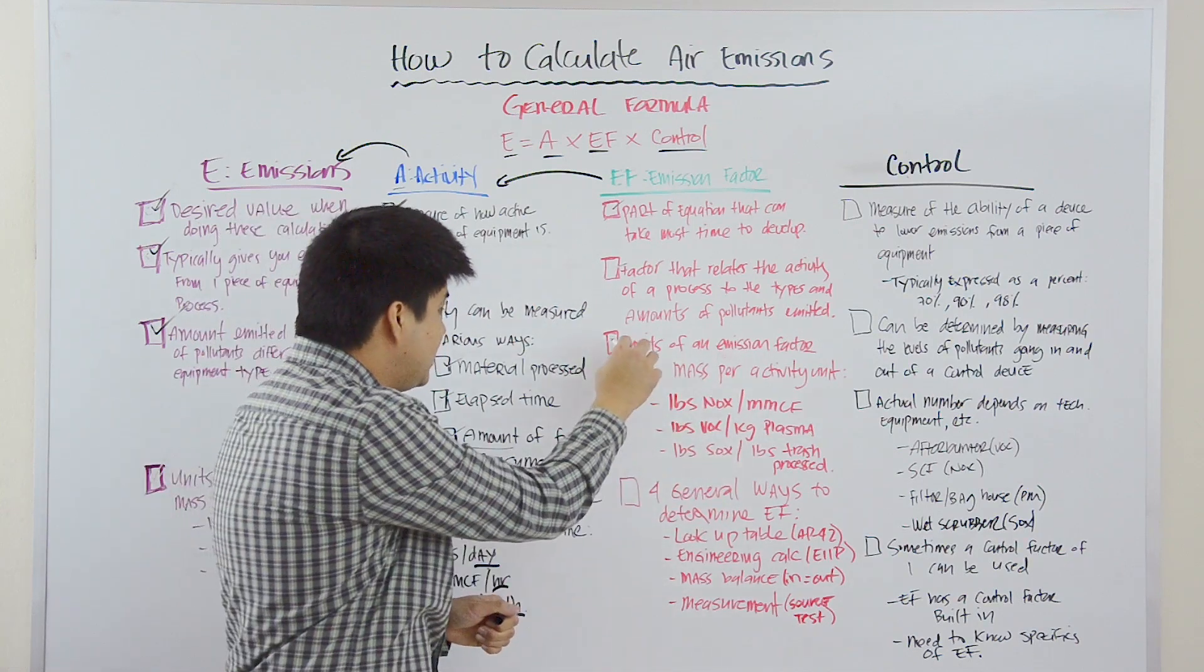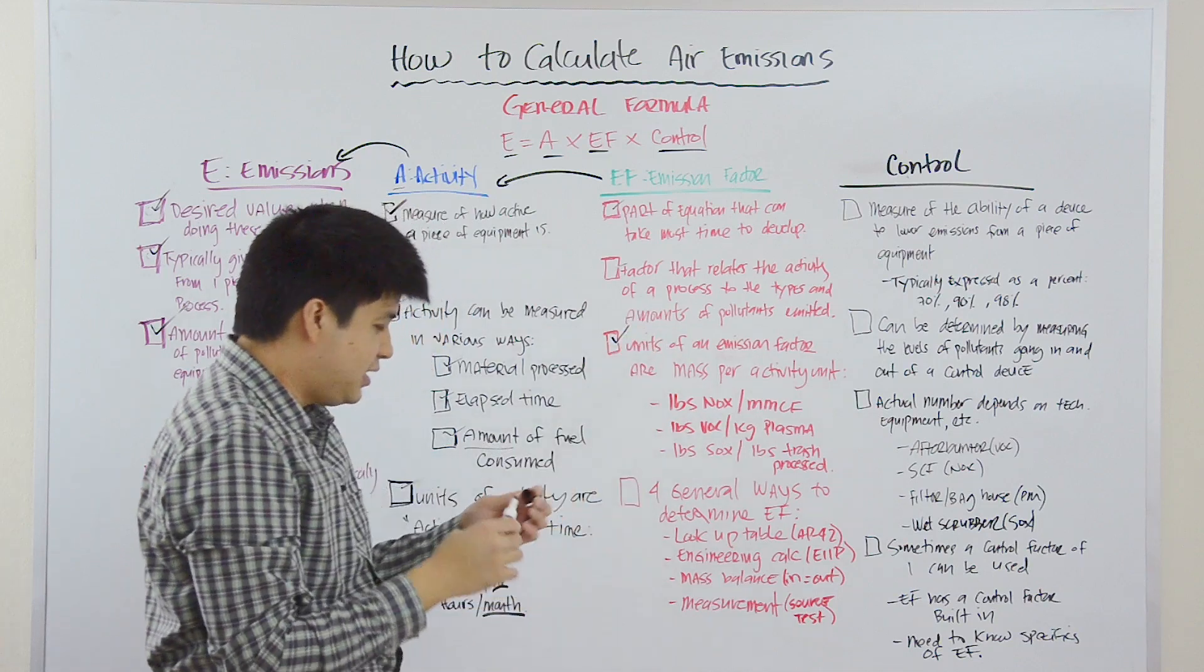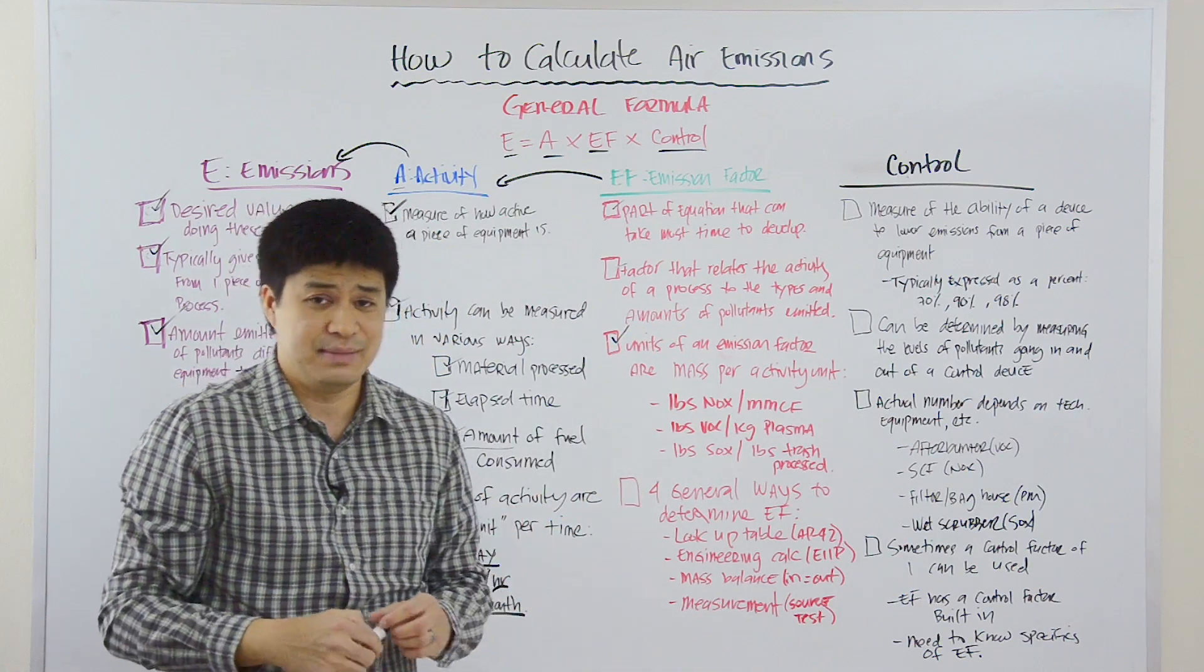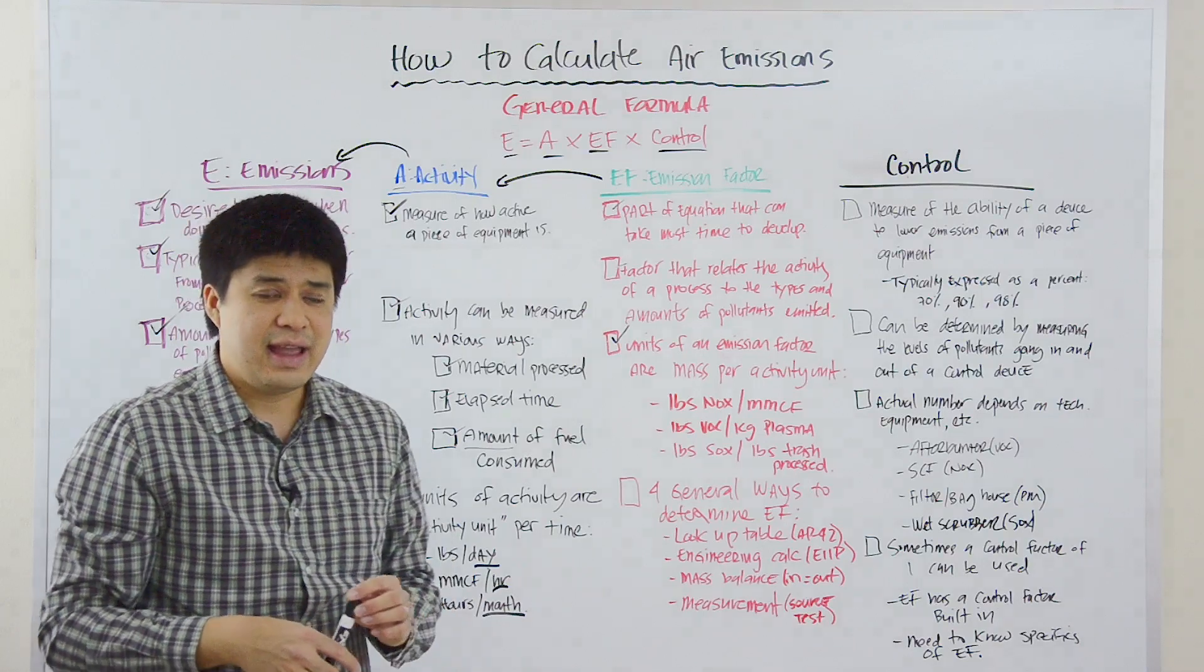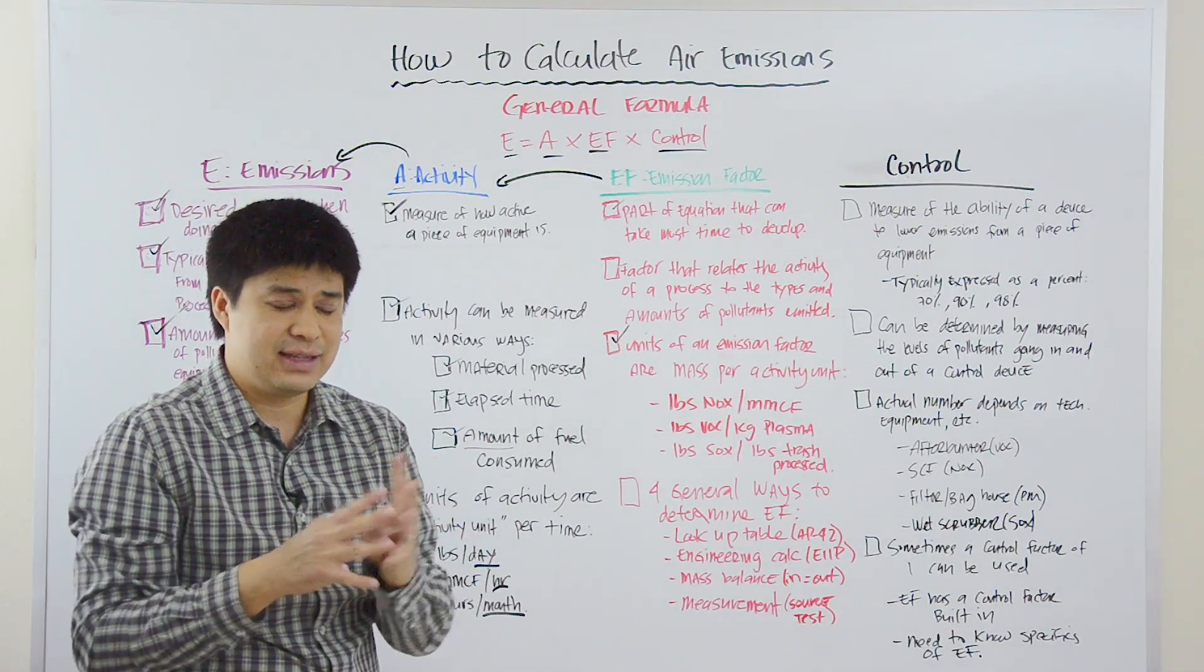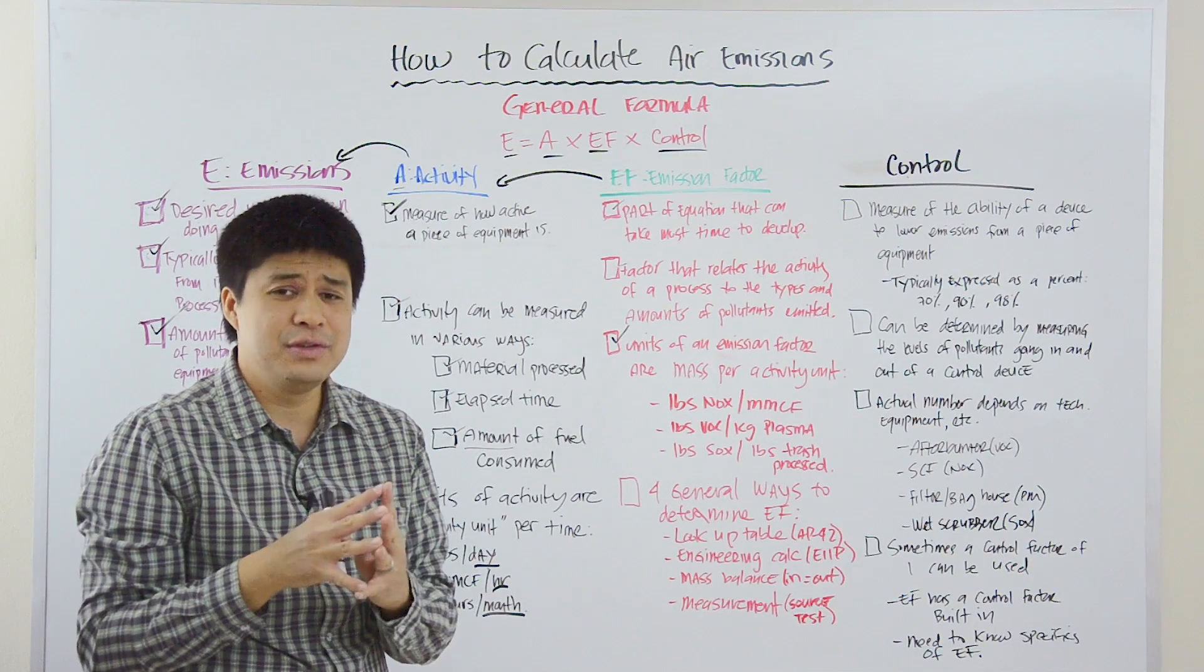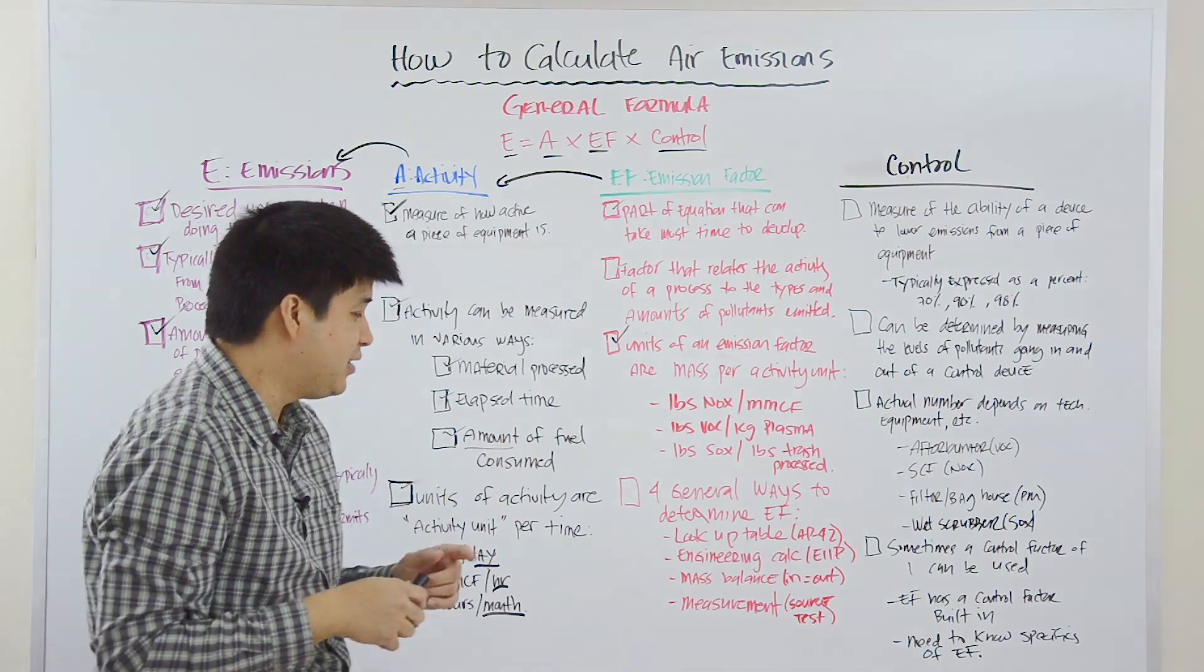Now, one of the big questions when it comes to emission factors is where can you find these emission factors or how do you determine these emission factors? And in practice, there are four accepted ways that we use to determine these emission factors.